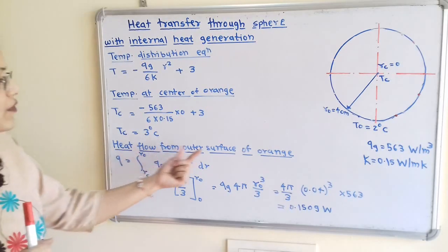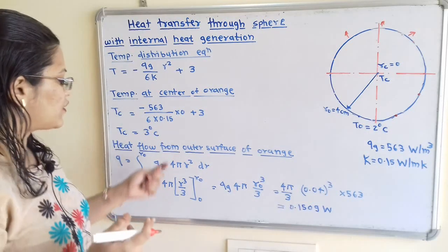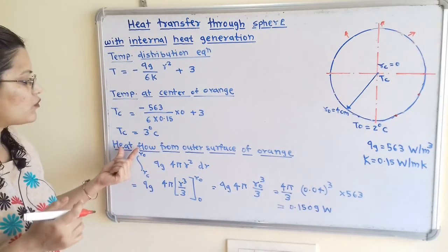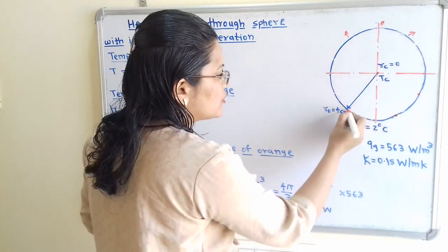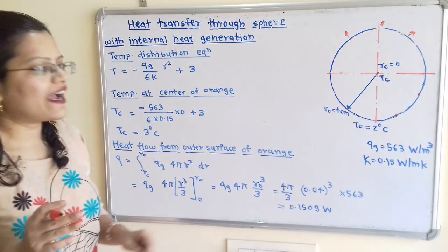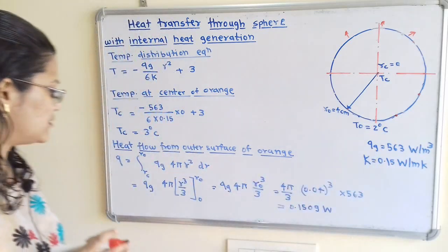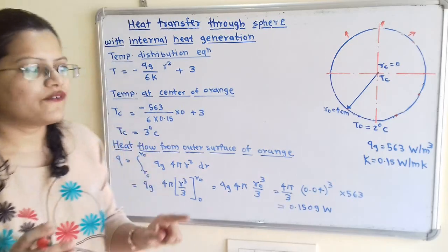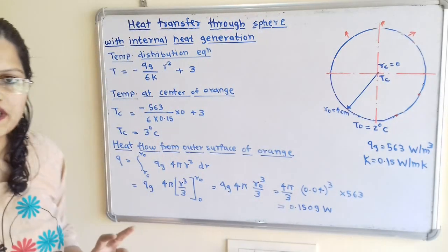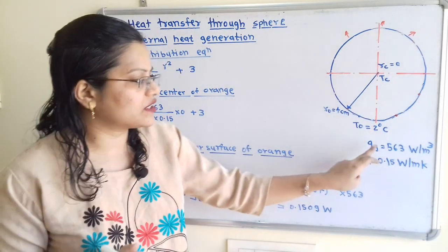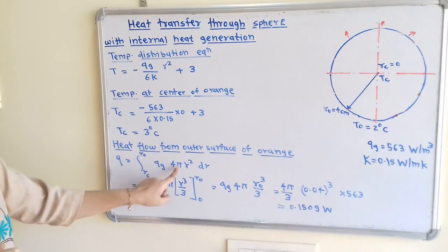The second part is the heat flow from the outer surface of the orange. Since this is a sphere, the area is 4πR². The total heat generated is obtained by integrating QG over the volume: Q = ∫(RC to RO) QG · 4πR² dR, with limits from 0 to 4 cm = 0.04 m.